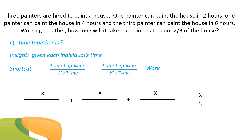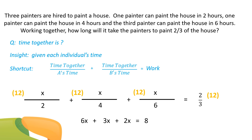X goes in the numerator of each fraction. The denominators are each individual's time: two, four, and six. The common denominator is 12, so we multiply through the entire equation. That gives us 6x + 3x + 2x = 8, and x equals 8 over 11.